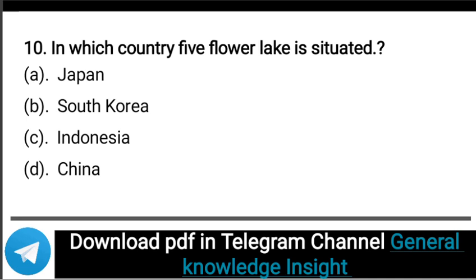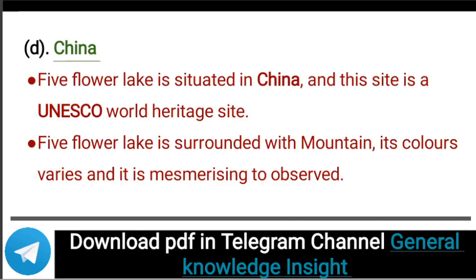Next question: In which country is Five Flower Lake situated? The correct answer is option D, that is China. Five Flower Lake is situated in China. This site is a UNESCO World Heritage Site. Five Flower Lake is surrounded by mountains, its colors vary, and it is mesmerizing to observe.